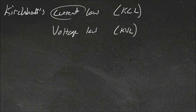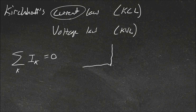The first one we'll talk about is the current law. KCL says that the sum of all currents at a node will equal zero. So in a circuit, if you have some cables coming into a point and they're all connected, we'll label them Current 1, which is going in that way, Current 2, which is going in that way, and Current 3, which is leaving that point.